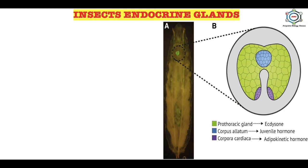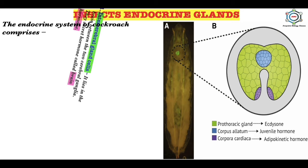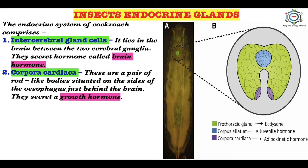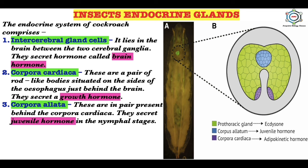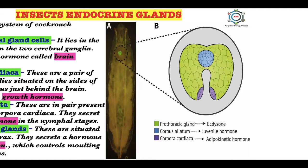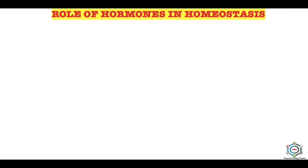The insect endocrine glands — the endocrine system of cockroaches — comprises four parts: first, the intercerebral gland cells, which lie in the brain between the two cerebral ganglia and secrete brain hormones; second, corpora cardiaca — a pair of rod-like bodies on the sides of the esophagus just behind the brain, secreting a growth hormone; third, corpora allata — in pairs behind the corpora cardiaca, secreting juvenile hormone in the nymphal stage; and fourth, the prothoracic gland, situated in the prothorax, secreting ecdysone, which controls molting of the nymphs.